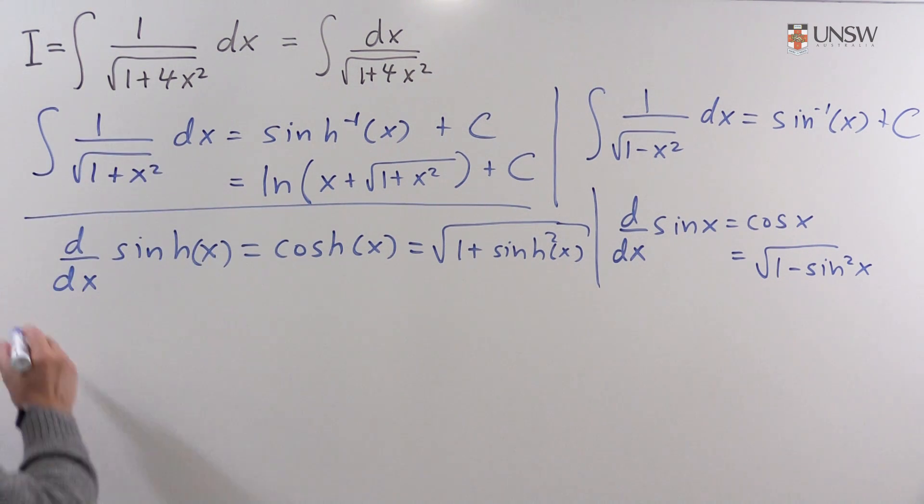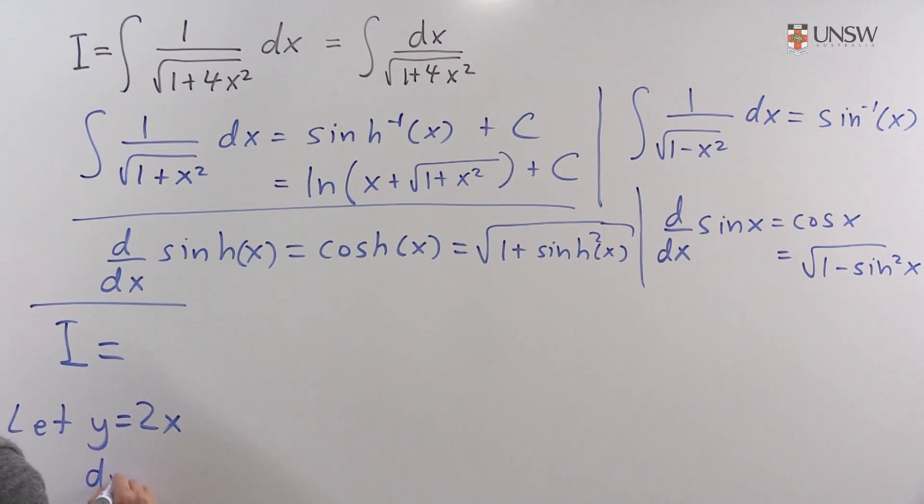Okay so let's solve this problem. So we're going to calculate I. And we're going to do that by making a substitution. So let's let y equals 2x, in which case dy equals 2 dx.